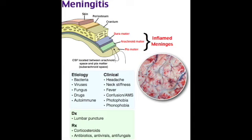For N. meningitidis: use droplet precautions, continued for 24 hours after antibiotics initiation. Post-exposure prophylaxis uses Cipro or Rifampin, needed only for close contacts with prolonged exposure over 8 hours or direct exposure to respiratory secretions. Prophylaxis is not recommended for healthcare workers without direct exposure to respiratory secretions.